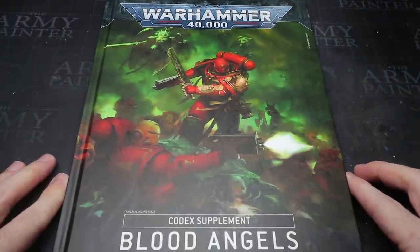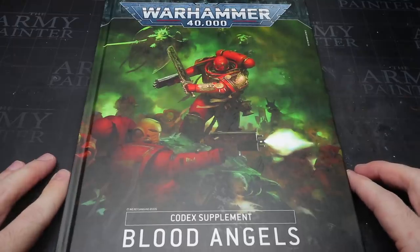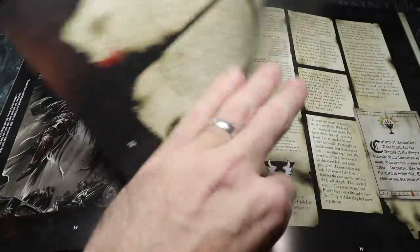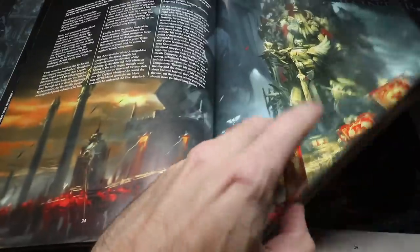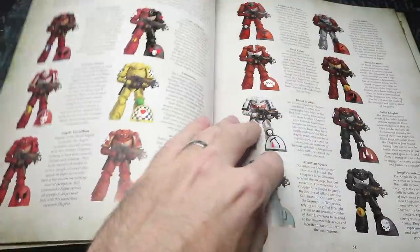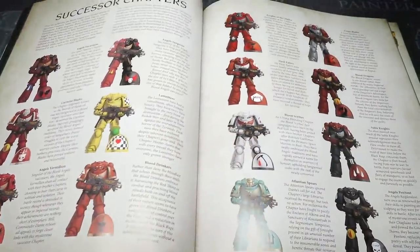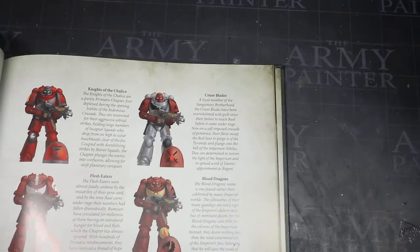With the release of the new Blood Angels Codex we have been given a few new successor chapters, so I thought that I would celebrate this fact with another successor conversion. I'm Pete the Wargamer and in this video I'll be showing you how to convert members of the Cruel Blades.